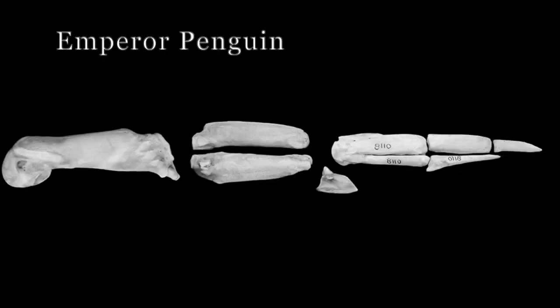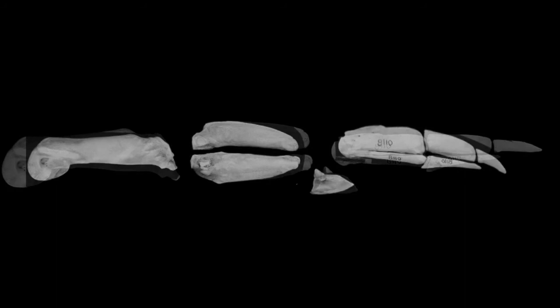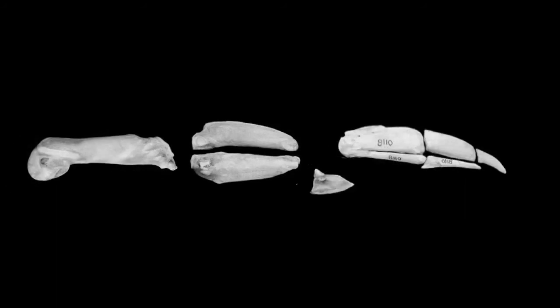Now let's look at the most ancestral extant penguin, the emperor penguin. Notice, the humerus to the rest of arm ratio is large for the penguin clade. Also, the bone width has increased significantly from Waimanu.